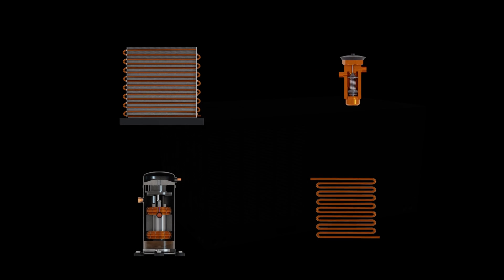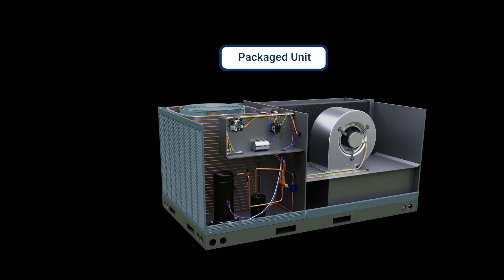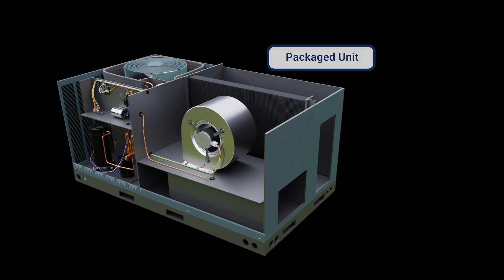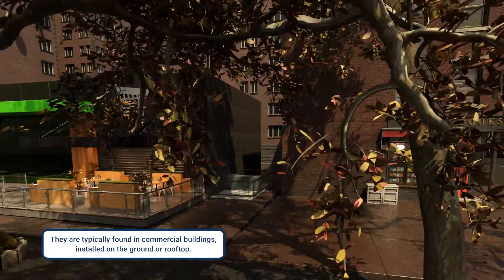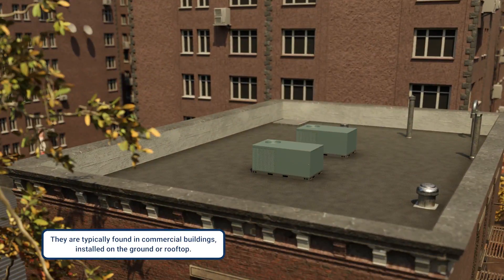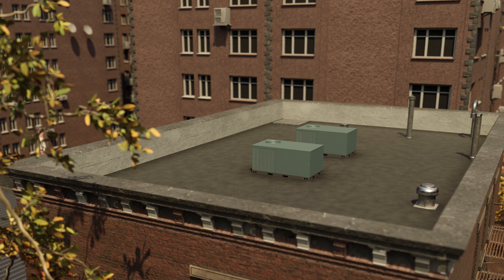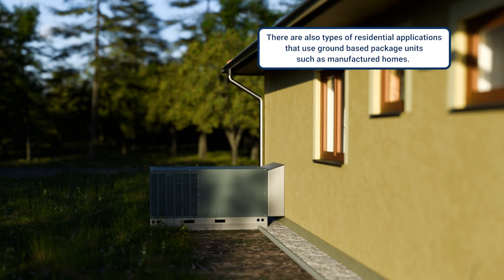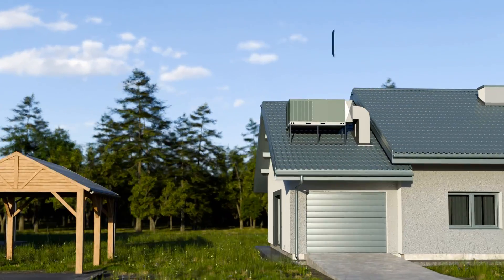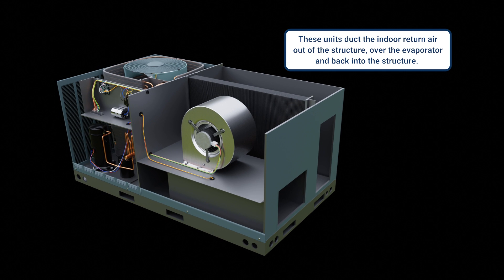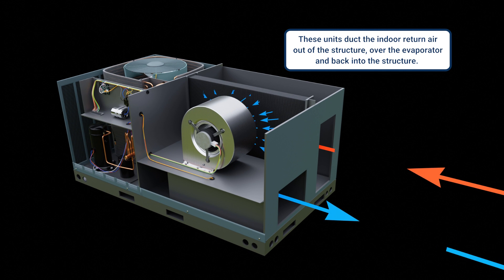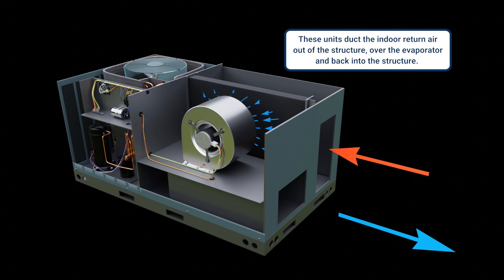A package unit combines the compressor, condenser, and evaporator in a single outdoor unit. They're often found in commercial buildings installed on the ground or on a rooftop. There are also types of residential applications that use ground-based package units, such as manufactured homes, and rooftop residential package units are also common in some western states. These units rely on ducting the indoor return air out of the structure, over the evaporator, and back into the structure.